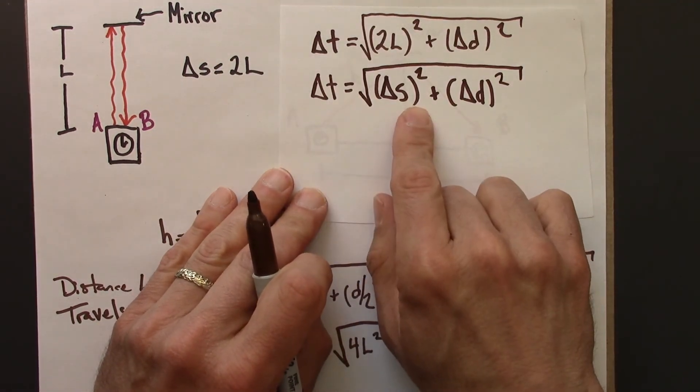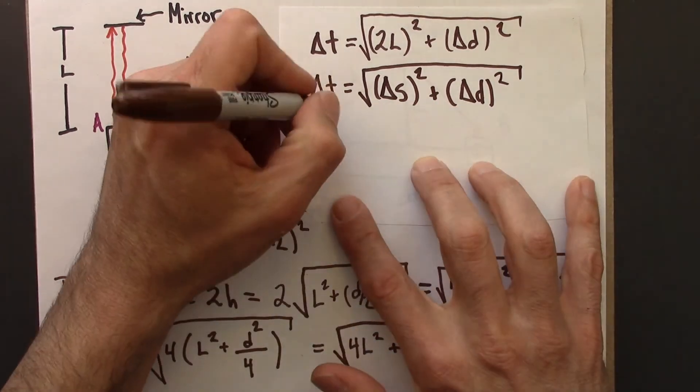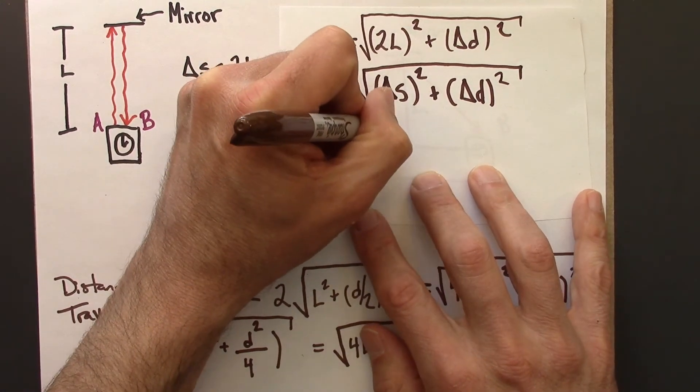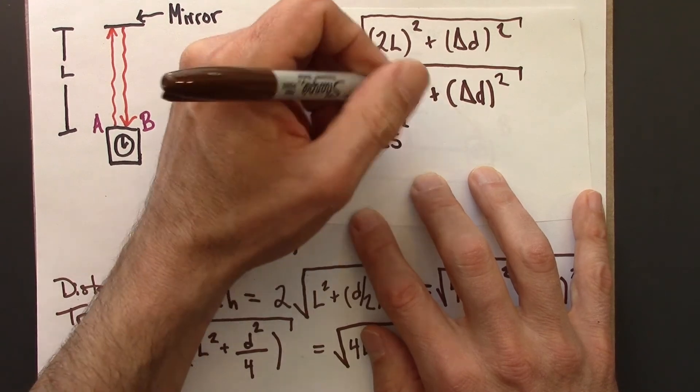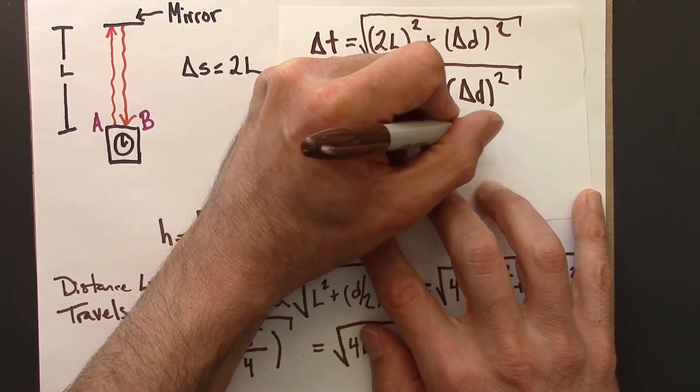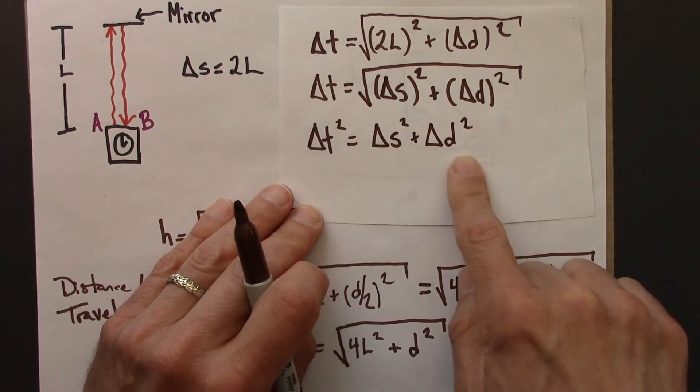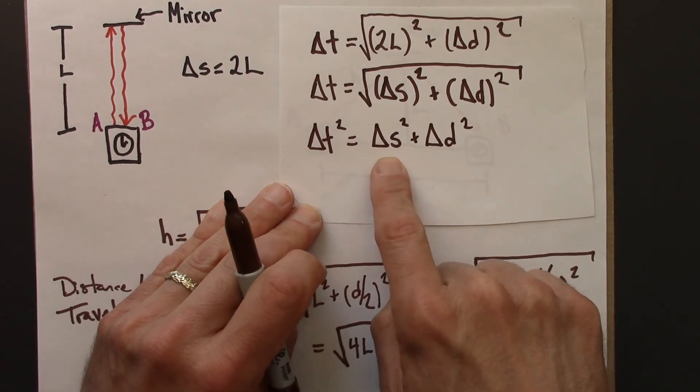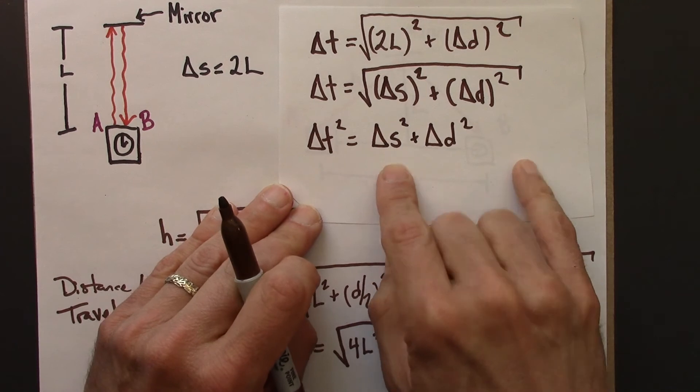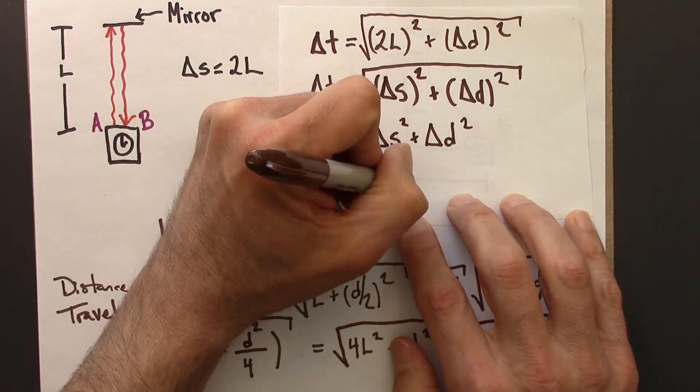Now let me square both sides to get rid of this annoying square root. So ΔT squared is ΔS squared plus ΔD squared, which sort of looks like the Pythagorean theorem. Let's solve this for ΔS. That's what we're after. We want an equation for the spacetime interval. So doing so, I get this: ΔS squared equals ΔT squared minus ΔD squared.